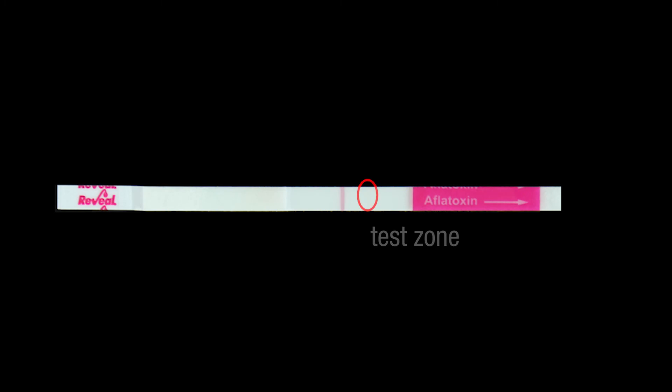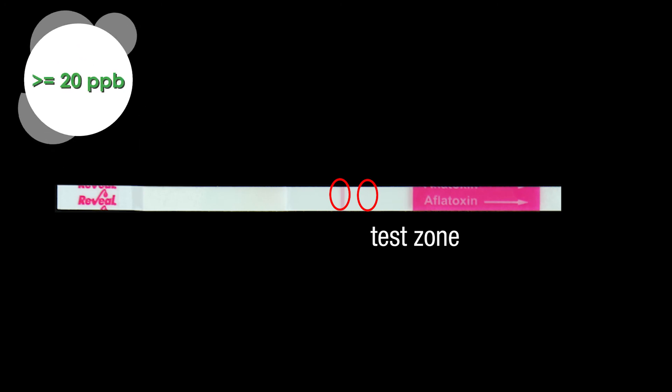If after the full three minutes there is no visible line in the test zone, but a visible line in the control zone, the sample contains at least 20 ppb aflatoxin and is a positive sample.